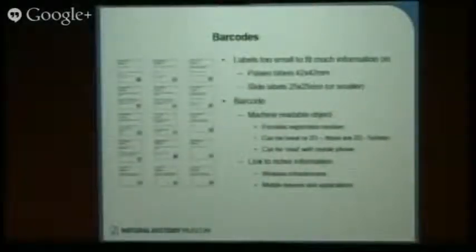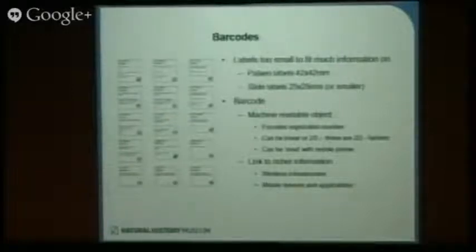Finally, barcodes. We have a lot of very small labels within the institution — an example of labels we currently produce for paleontology is 42 millimeters by 42 millimeters, and many of our labels are even smaller than that. It is physically impossible to fit very much information on a label that size. So what we've done is start printing a barcode — at this point just the registration number or specimen ID — so that if you're out in the collection, it provides a machine-readable link to richer information. We have successfully printed and read these at three millimeters by three millimeters, so with our current technology this actually works.